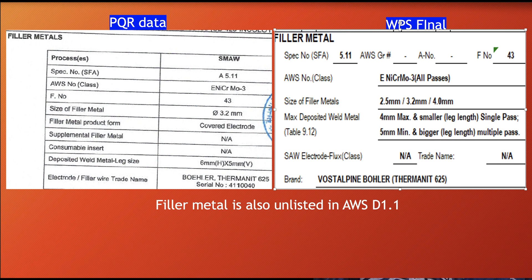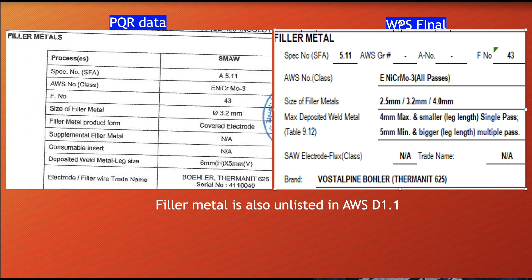The electrode trade name — the manufacturer brand — is Bohler. In the final WPS, the specification number and F-number 43 remain the same, with no A-number applicable. The AWS classification is ENiCrMo-3 for all passes. Filler metal sizes listed are 2.5, 3.2, and 4.0 mm for better flexibility. For any single pass, 4 mm maximum deposition applies; 5 mm minimum and above for multiple passes. Since it is a fillet weld, the sizes mentioned here refer to leg length.